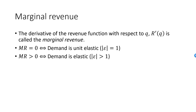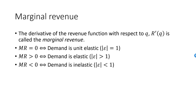Increasing Q when demand is elastic will increase revenue. For example, for a linear demand function, marginal revenue is strictly positive in the upper left area of the demand curve — the rubber band region of the demand curve.